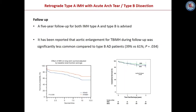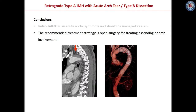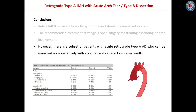All patients affected by intramural hematoma, including retrograde intramural hematoma as well as Type B, need follow-up. Five-year follow-up is advised. It has been reported that aortic enlargement during follow-up is significantly less common when compared to those patients with acute Type B dissection presenting with patent true and false lumen. In conclusion, retrograde Type A intramural hematoma is an acute aortic syndrome and should be managed as such. The recommended treatment strategy is open surgery for treating ascending or arch involvement in fit patients whenever possible. However, there is a subset of patients with acute retrograde Type A dissection intramural hematoma who can be managed non-operatively with acceptable short and long-term results.